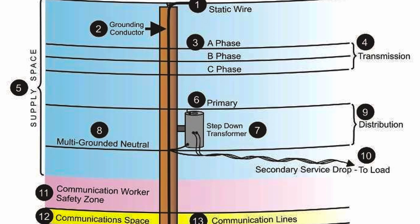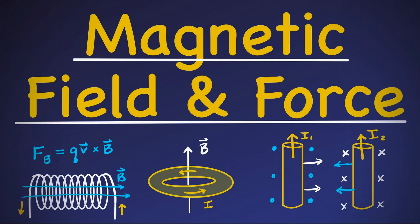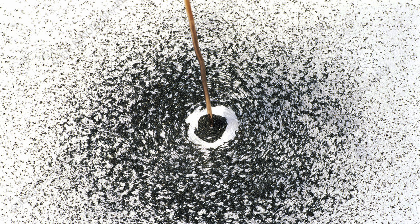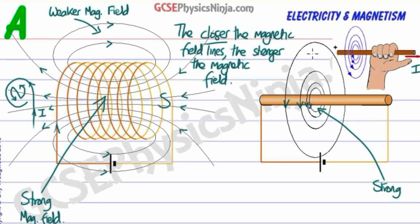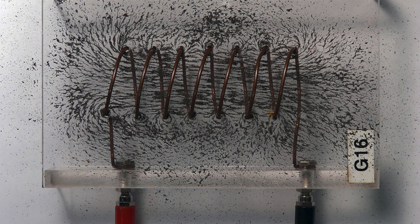For a long time I did not know that sound — or current, and sound is current — goes not only inside the copper cable, but also on its surface. It also runs in a magnetic field around the cable. Of course, the surface of the cable is of great importance.